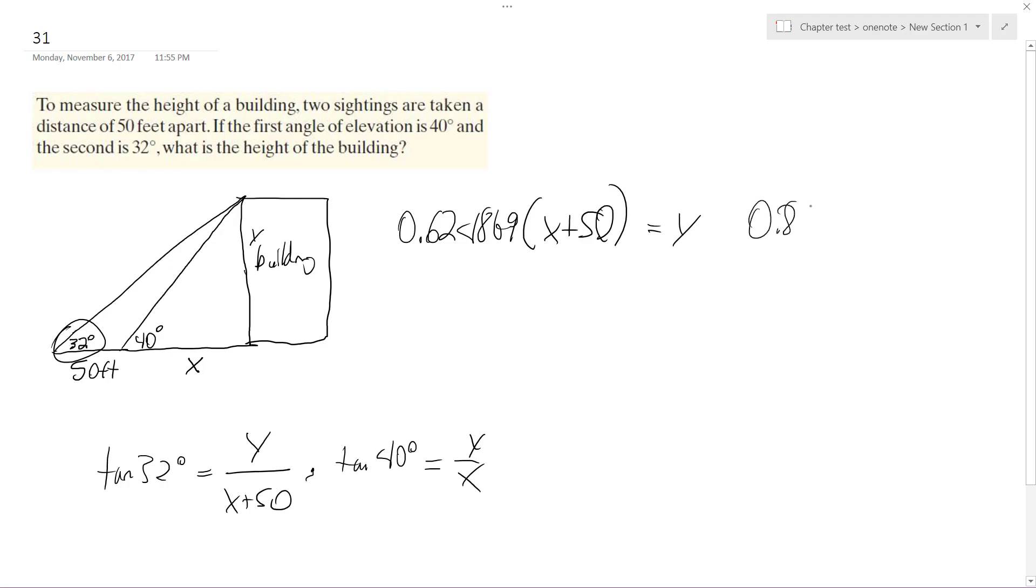So 0.839099, and so forth, is equal to, oh, times x because I multiply by x is equal to y.